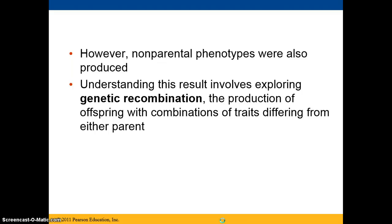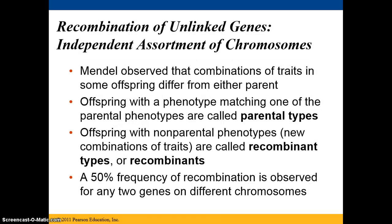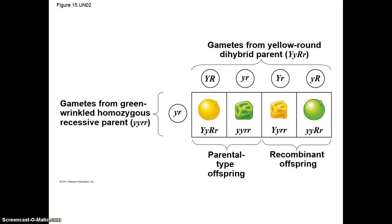He also noticed that there were non-parental phenotypes that were also produced. Understanding this result involves the exploration of genetic recombination — the production of offspring with combinations of traits different from either parent. Recombination of unlinked genes is governed by the independent assortment of chromosomes. Mendel observed that combinations of traits in offspring differ from either parent. Offspring with a phenotype matching one of the parental phenotypes are called parental types; offspring with non-parental phenotypes are called recombinant types or recombinants. There is a 50% frequency of recombination observed for any two genes on different chromosomes.